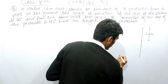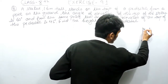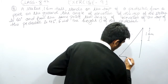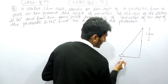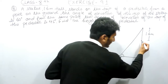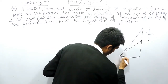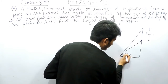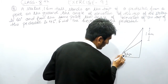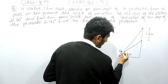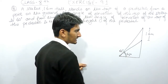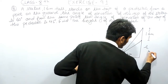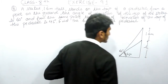From a point on the ground, if you look at the top of this statue, the angle of elevation is equal to 60 degrees. And if you look at the top of the pedestal, that angle is equal to 45 degrees, while the complete angle up to the top of the statue is 60 degrees. You have to find the height of this platform, or the pedestal.